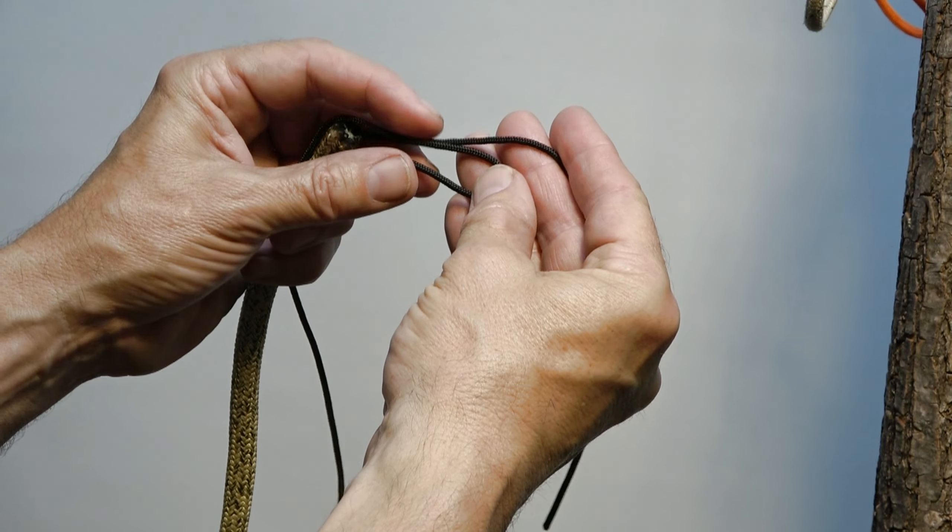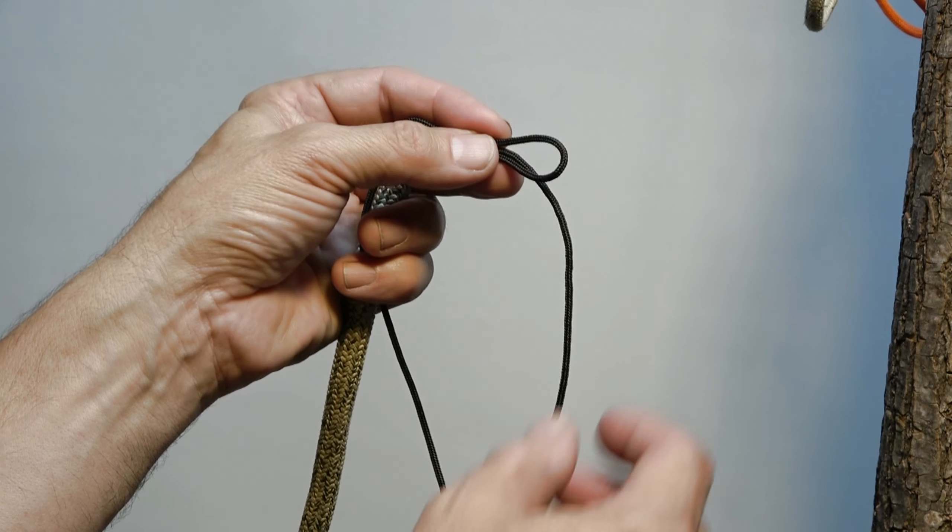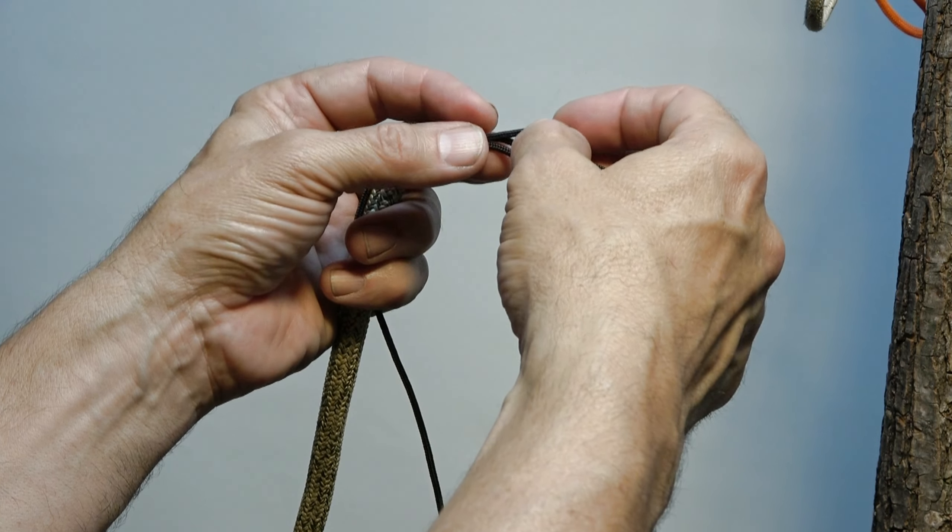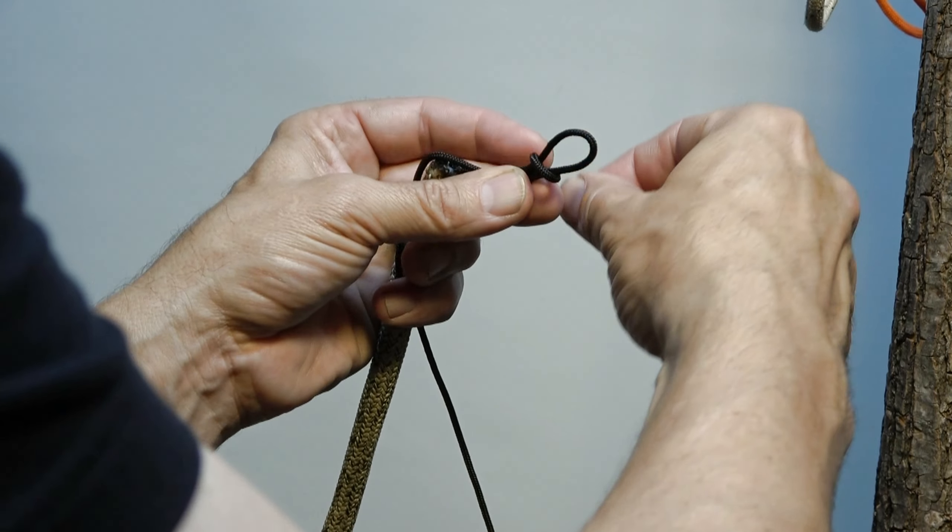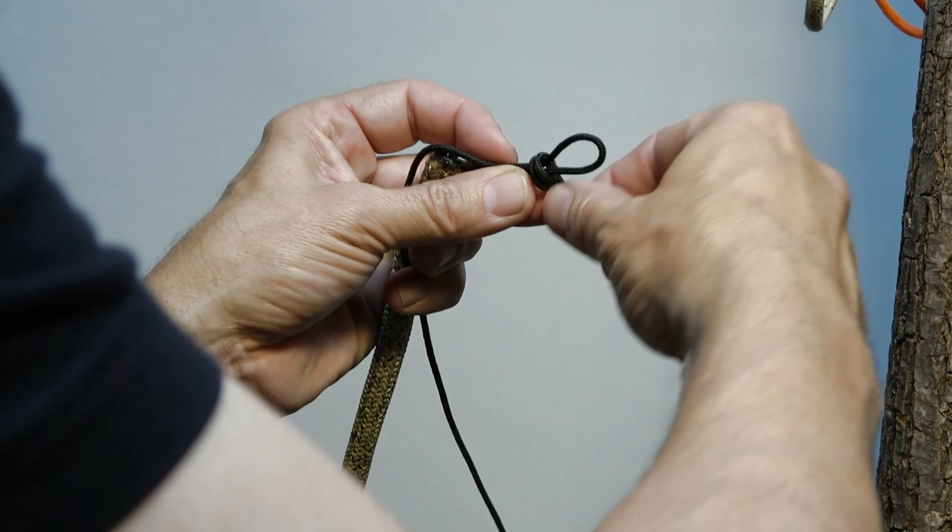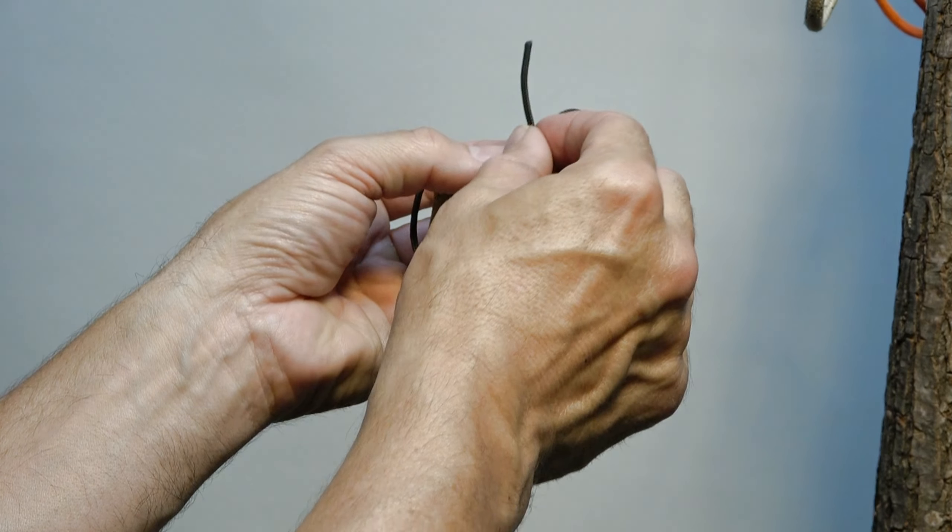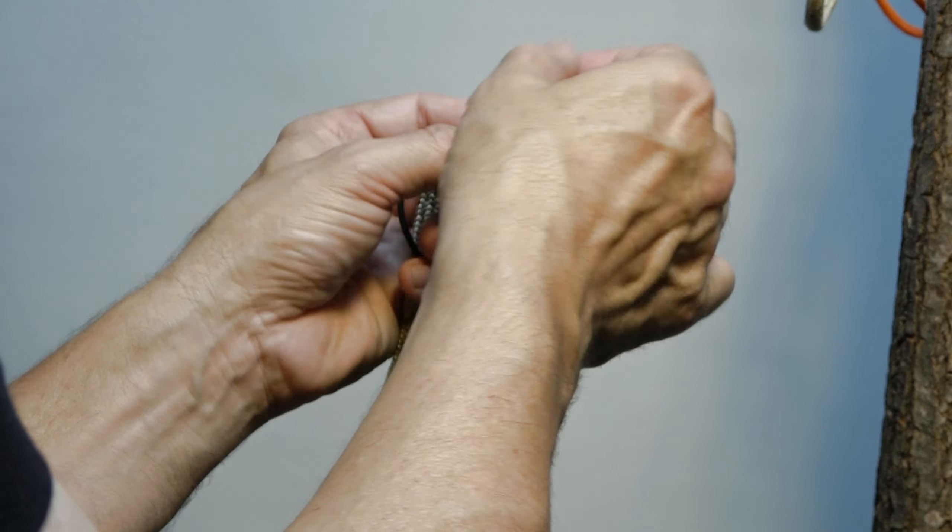Now, as per the prior video on the sliding triple fisherman's, with that upper strand I'm going to make three coils working from right to left over the whole assembly: one, two, three. I'll take that end and slide it under the three coils that I just made. Well, that went remarkably well.